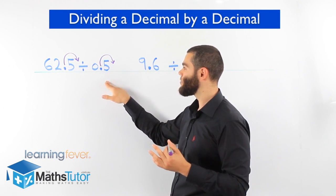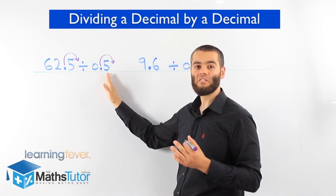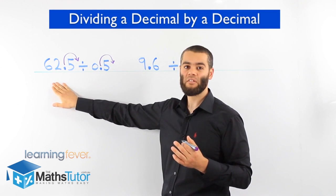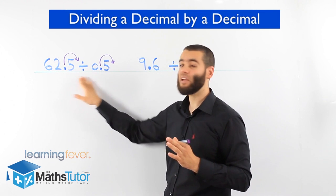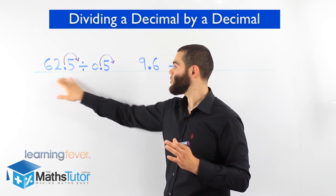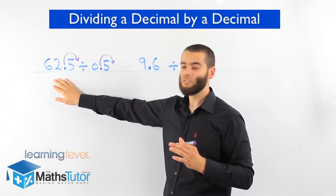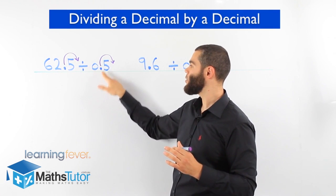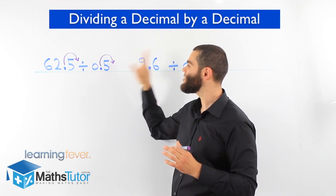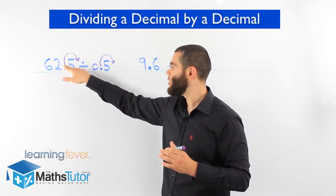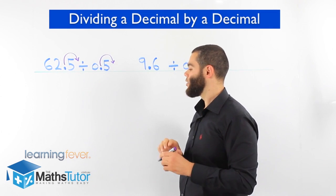Now it's going to become a 5. Whatever we do to one side, we've got to do to the other side. In mathematics, we have to always be fair. So we have to make sure whatever we do here, we've got to do on this side too. So we've changed this to make it into a whole number. We move the point to the right once. We've got to do the same thing on this side and move it to the right once again.